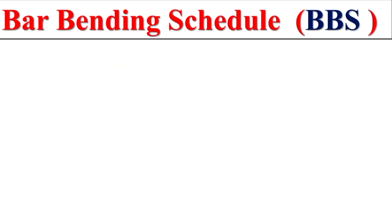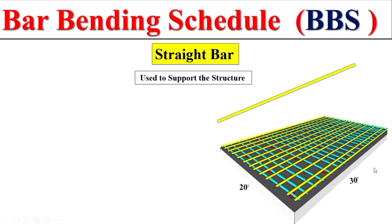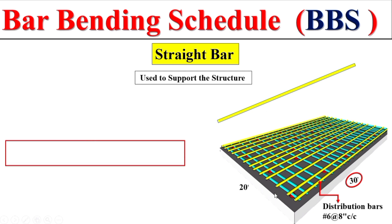Now, for different types of bar shapes in Bar Bending Schedule, the first is the straight bar. For example, we have a slab with width 20 feet and length 30 feet. This slab has both main bar and distribution bar. The 30-feet span has distribution bar which is number 6 bar with center-to-center spacing of 8 inches.